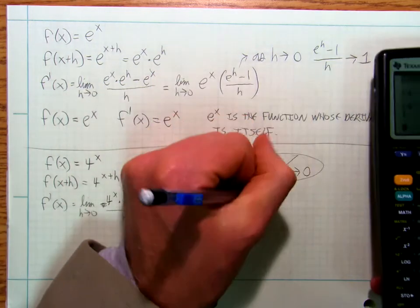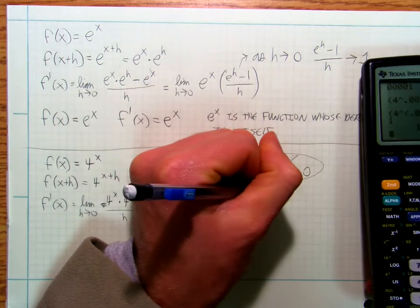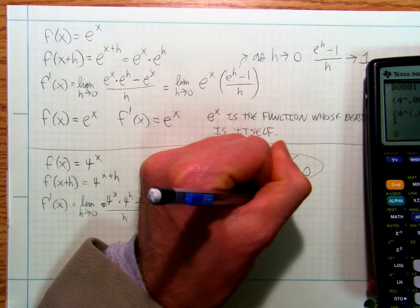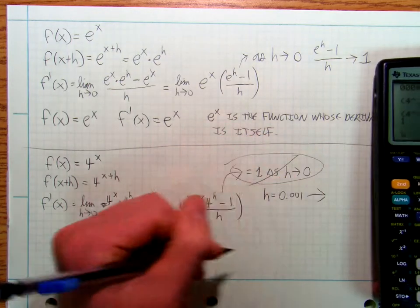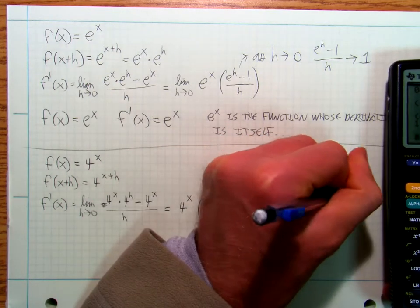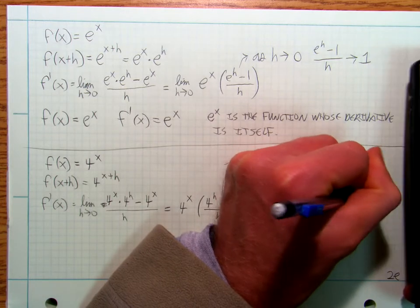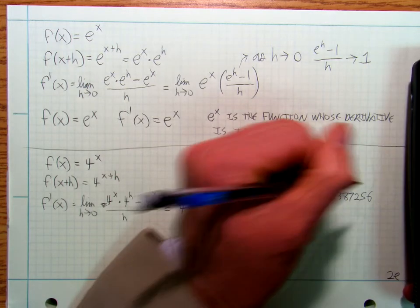So I get h is equal to 0.001. That's going to go to 1.387256. Call it that.